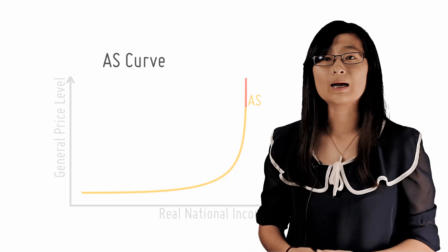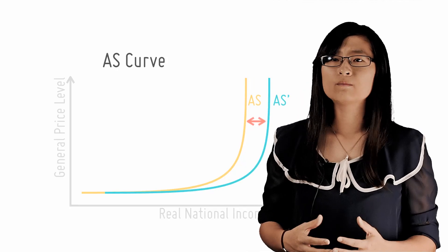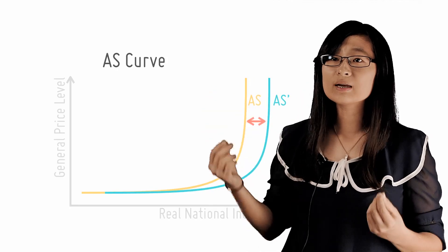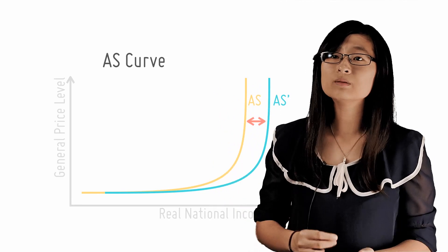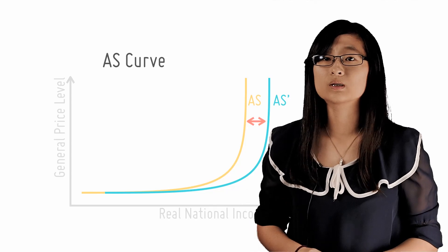On to the vertical classical range. This part of the curve can move either left or right and is mainly affected by changes in the productive capacity of an economy. It moves in a similar manner to the production possibilities curve.